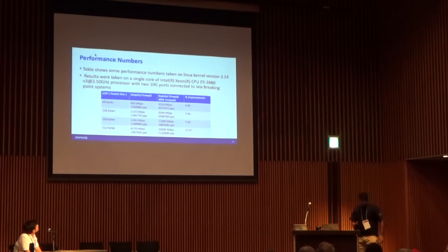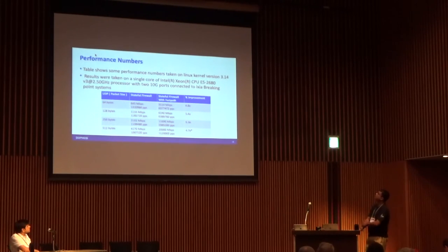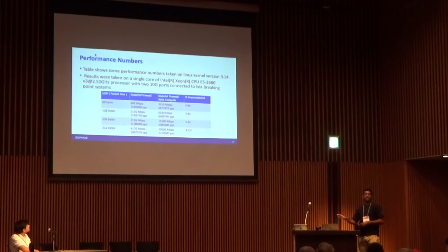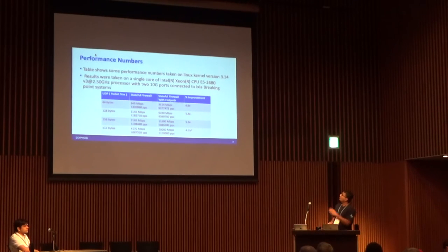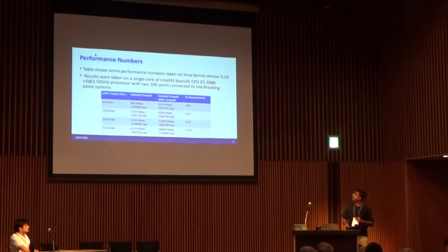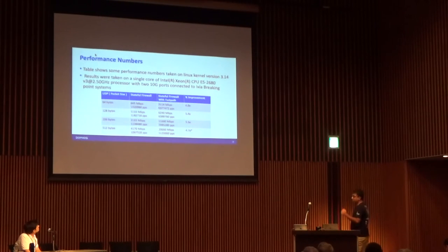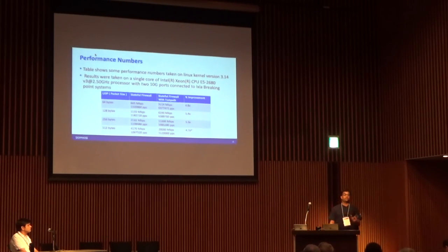Here are some performance numbers. Results are taken on a single core — Intel Xeon E5-2680 at 2.5 GHz with two 10-Gig ports connected, and all GRO/GSO offloads disabled — pure software, no hardware offloading. With everything together, we are getting almost 5x throughput improvement just via software changes. On every packet size we get almost 5x throughput for stateful firewall. With this single core on a 12-core CPU, for 512-byte and 1024-byte packets, we easily reach 10 Gbps with stateful firewall.